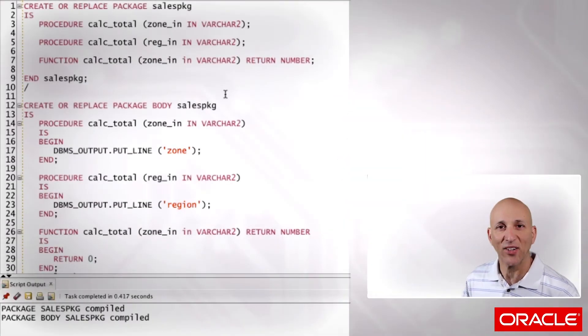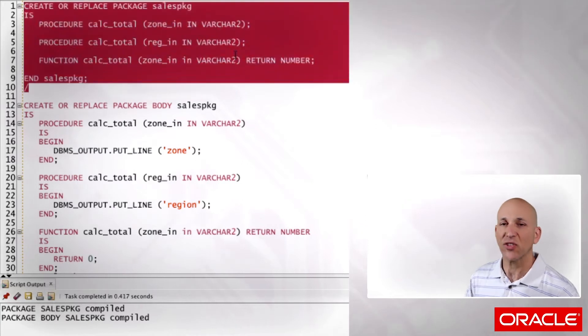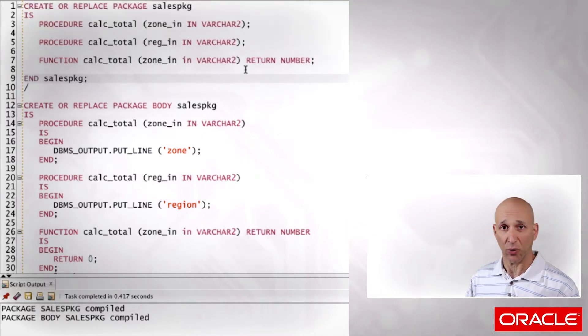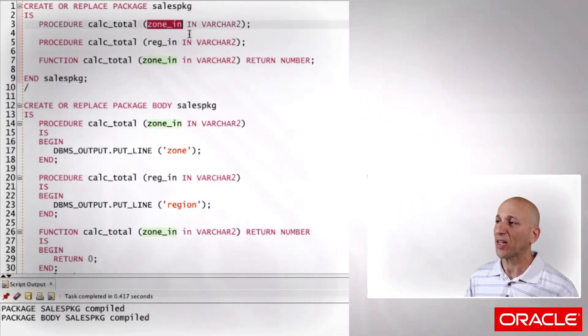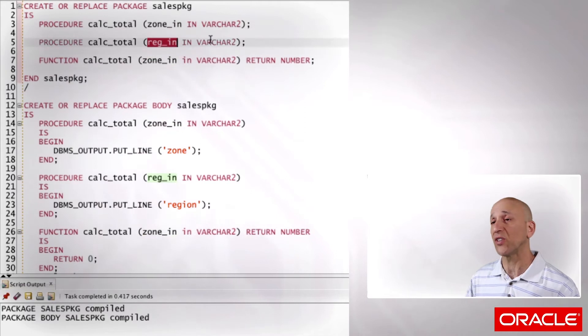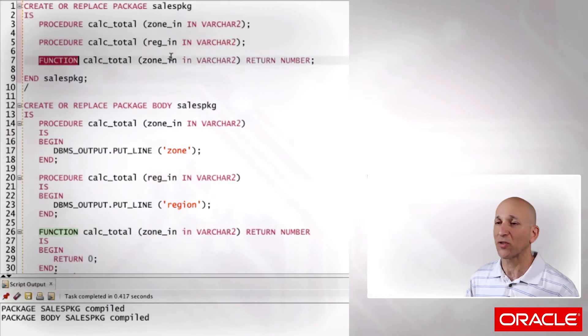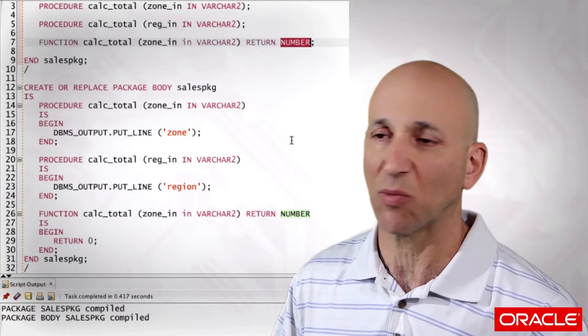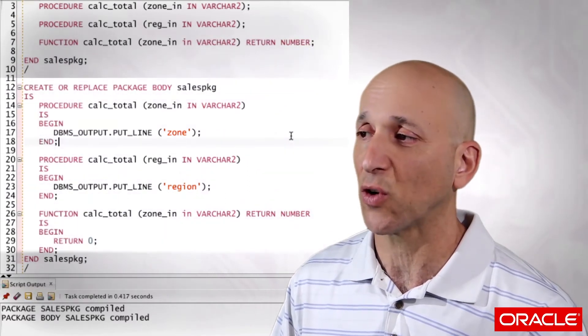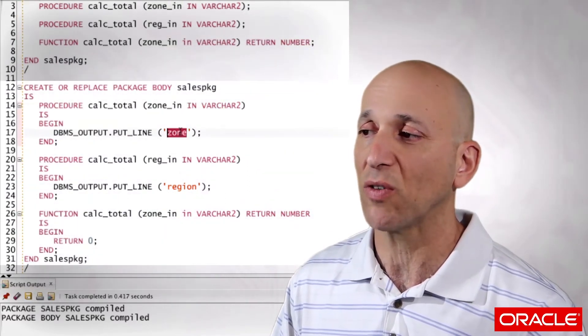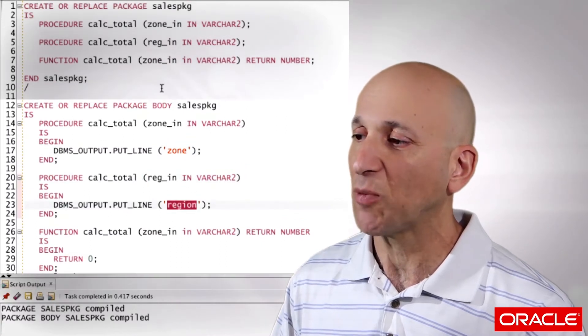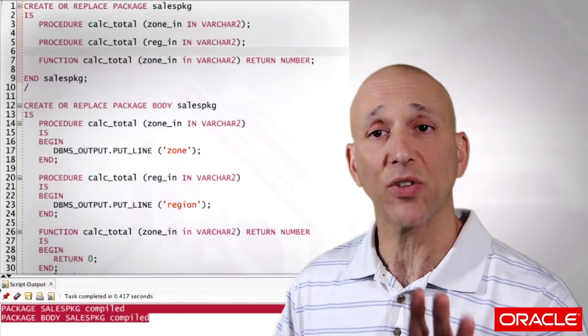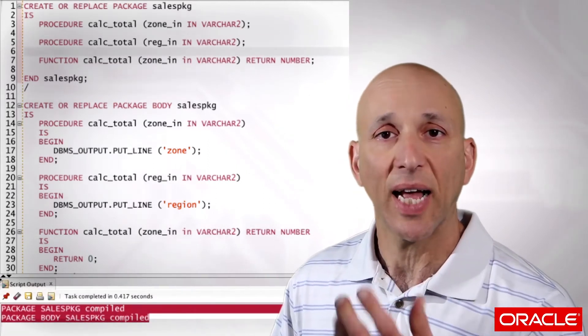Let's start with a package called sales package. It has three different subprograms, all called calctotal, so it's overloaded. One has a parameter called zoneN, type string. The second procedure has a parameter called regionN, also a string. And the third subprogram is a function with the same parameter zoneN, single string, returning a number. The implementation is rather silly, it just displays a message or returns zero. These packages both compiled without any error whatsoever. Oracle said they're fine. Let's try using them.